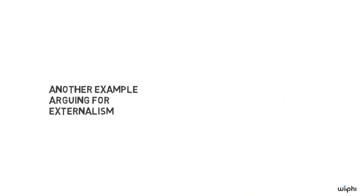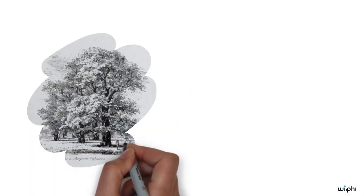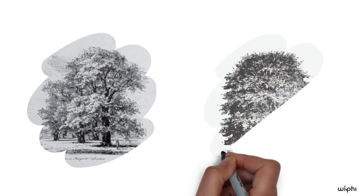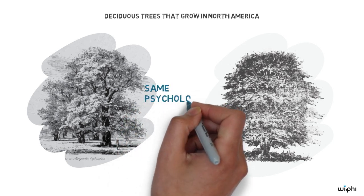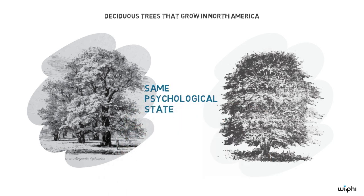Let's look at one more example that's meant to be an argument for externalism. This example is also developed by Putnam. Suppose that I cannot tell the difference between beech trees and elm trees. I think of both as deciduous trees that grow in North America, and I just don't have any more information about them. Given this, it seems that I am in the same psychological state when thinking, beaches are lovely, and elms are lovely.